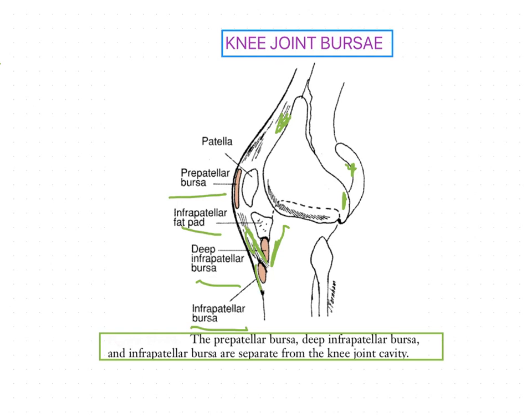There are also several small bursae associated with the ligaments of the knee joint. There is commonly a bursa between the lateral collateral ligament and the tendon of the biceps femoris muscle, and between the lateral collateral ligament and the popliteus muscle. There is also a bursa deep to the medial collateral ligament protecting it from the tibial condyle, and one superficial to the medial collateral ligament protecting it from the tendons of the semitendinosus and gracilis muscles that cross the medial collateral ligament.